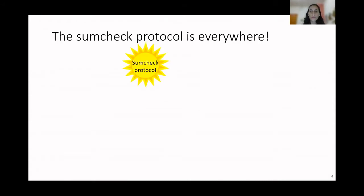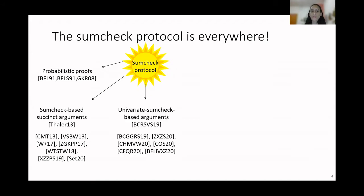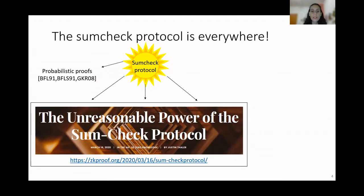The sum-check protocol is a very celebrated protocol. It was first used in complexity theory, and in particular in probabilistic proofs. Since then, it has been used in many other areas such as succinct arguments, and there have been many different versions of the sum-check protocol with many applications. These versions include the univariate sum-check and the sum-check for tensor codes. Sum-check has been so important that there have been blog posts titled 'The Unreasonable Power of the Sum Check Protocol' by Justin Thaler.